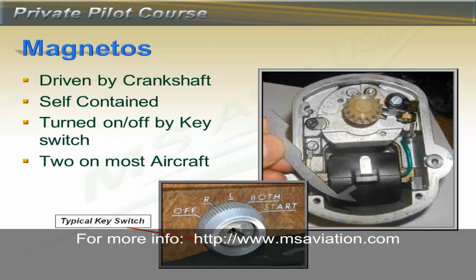If the pilot selects either L for left or R for right, then one magneto is switched off and only one is providing electricity to the spark plugs. This causes a drop in engine RPM, which is shown on the tachometer. If the pilot selects off, then both magnetos are not providing electricity to the spark plugs and the engine will stop. It's important to know that even when the key switch is turned to left, right, both, or off, the magnets are still spinning — it's just that electricity is not allowed to flow to the spark plugs.